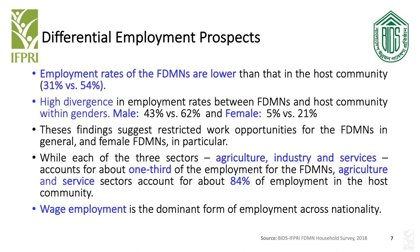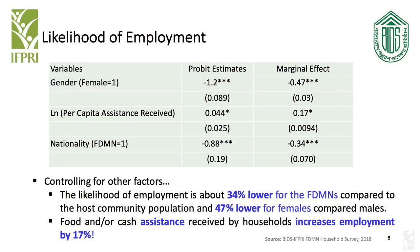We looked into the prospects of employment using probability regression and marginal effects. As found in the descriptive statistics, these results corroborate the same findings: employment prospects are about 34% lower for FDMNs. We also noticed that TEPF per capita assistance received in fact increases the prospect of employment.